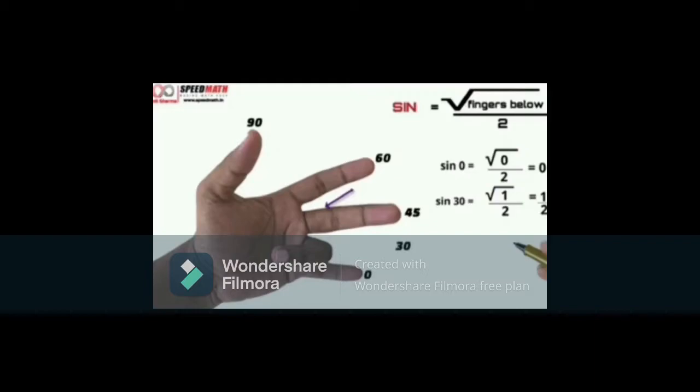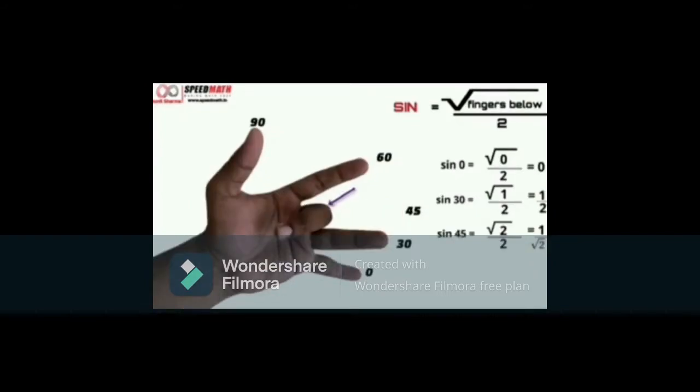Now let's find out the value of sine 30. The number of fingers below the ring finger is 1. So by the formula, the value of sine 30 is root 1 by 2, that is 1 by 2. Now let's find out the value of sine 45. The number of fingers below the middle finger is 2. So by the formula, the value of sine 45 is root 2 by 2, by rationalizing we get 1 by root 2.